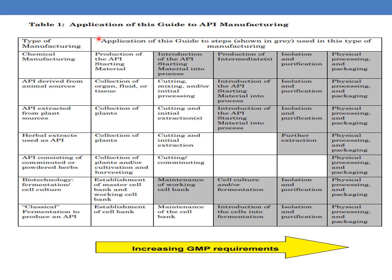The table shows the application of this guide in API manufacturing. The grey colour indicates the introduction of the API starting material into the process. For chemical manufacturing, introduction of API starting material into the process starts at the second step. This guide includes guidelines from that grey point onward — covering production of the intermediate, isolation and purification, physical processing, and packing — but does not include steps prior to the introduction of the API starting material. The stringency of GMP requirements increases as the process proceeds toward the final packing step.